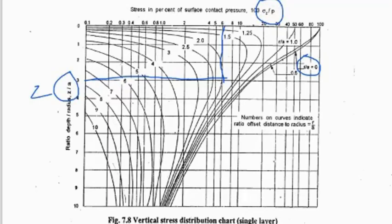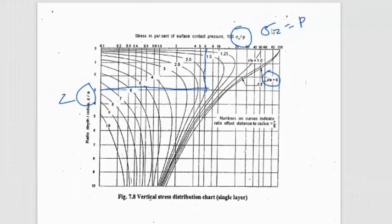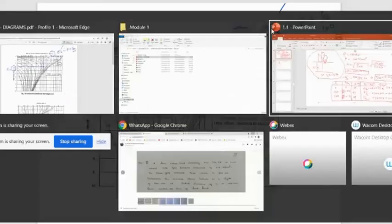So Sigma Z by P is equal to 6. We will be knowing small p. So Sigma Z is equal to small p into 6 divided by 100. Like that you can find the Sigma Z for various R by A and various Z by A. That is what is being calculated here.